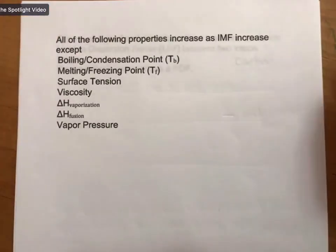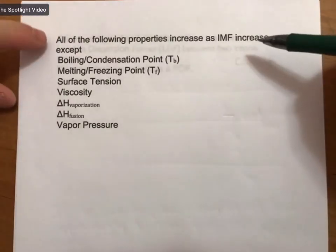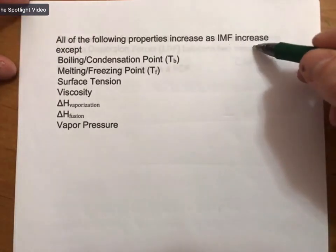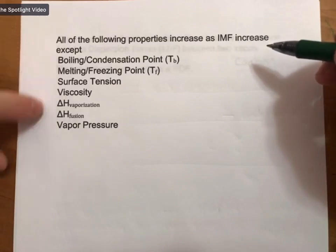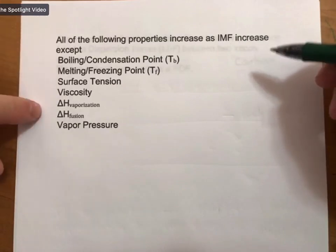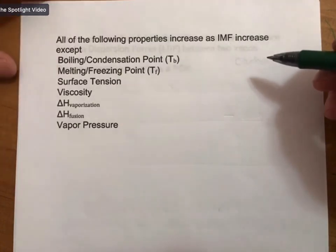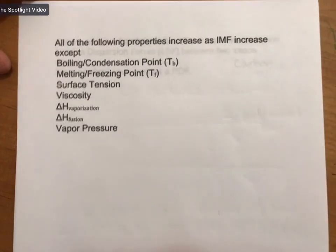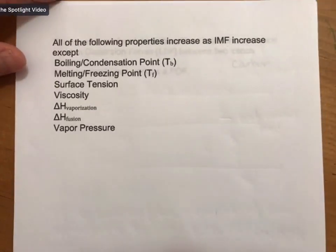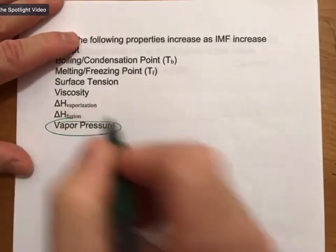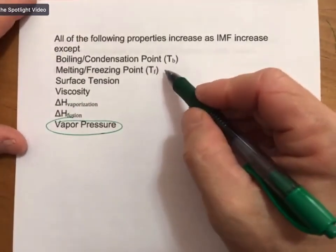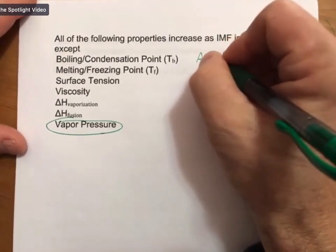Moving to the next homework question: all of the following properties increase as intermolecular forces increase except one. Does anybody know which one does not increase as IMF increases? The answer is vapor pressure.